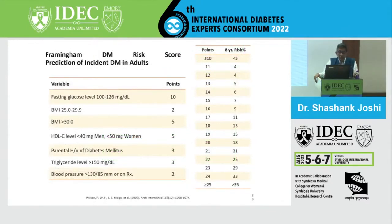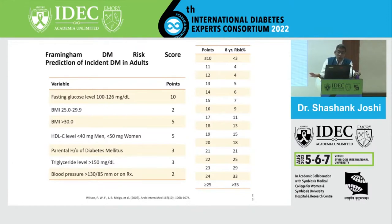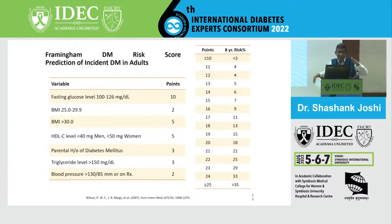If you look at Framingham-based models on incident diabetes in adults, we can now assign points. Fasting glucose gets 10 points, BMI 25-29 gets 2 points, BMI above 30 gets 5 points, HDL below threshold for men and women scores 5 points, parental history of diabetes gets 3 points. Triglycerides above 150 got 3 points - and that's where triglycerides come into the picture. Triglycerides are an epiphenomenon of triglyceride-rich lipoproteins, all linked to carbohydrate intake.